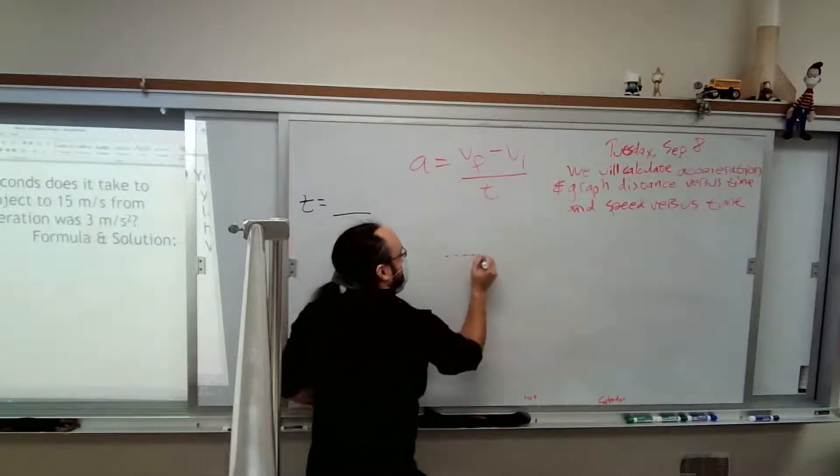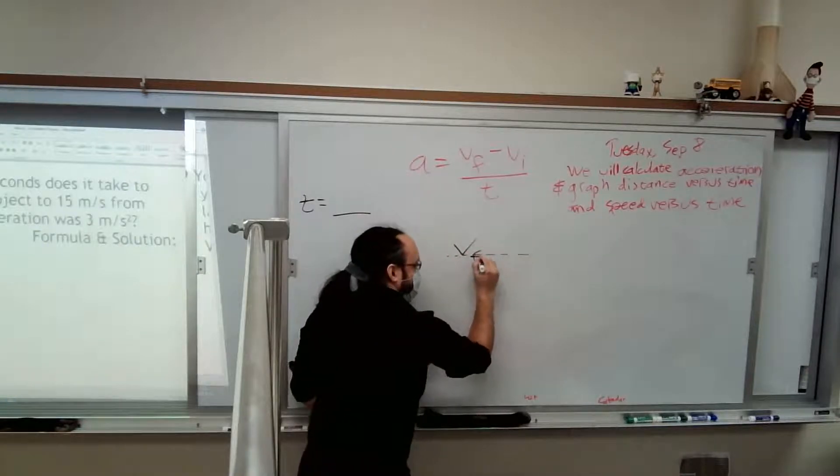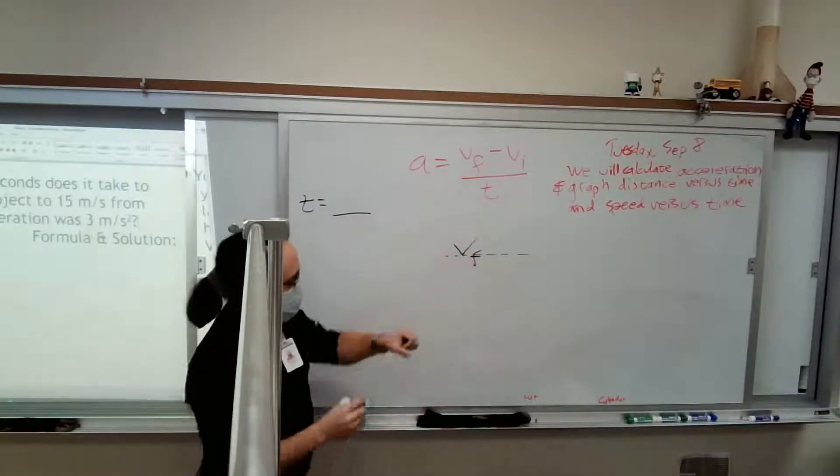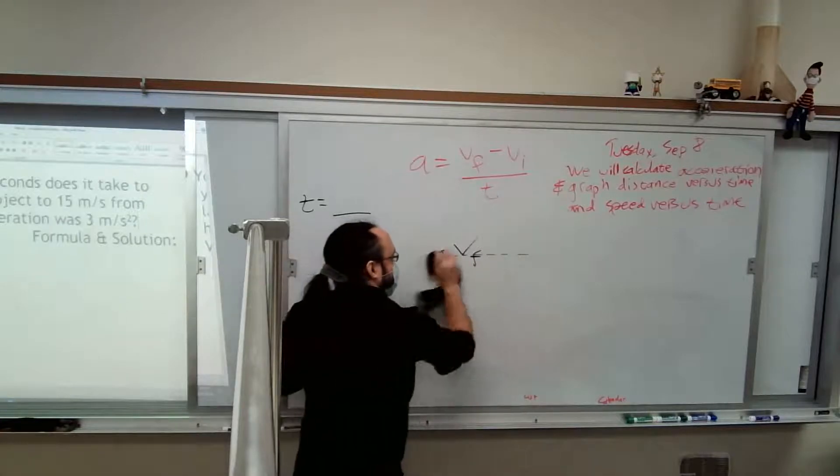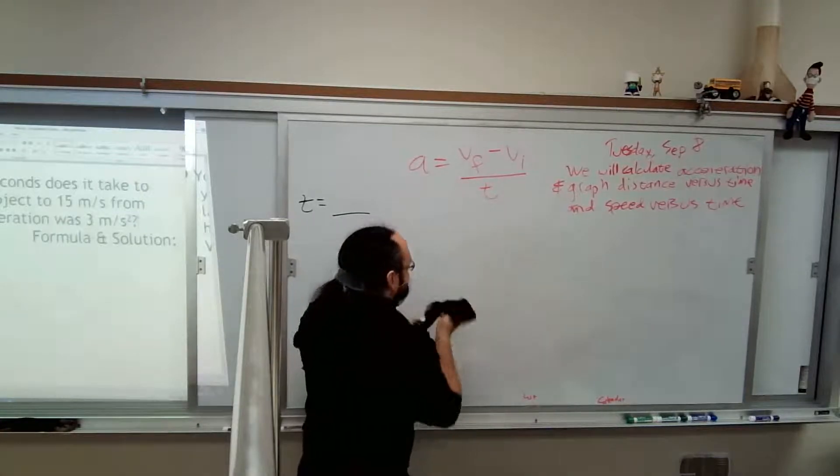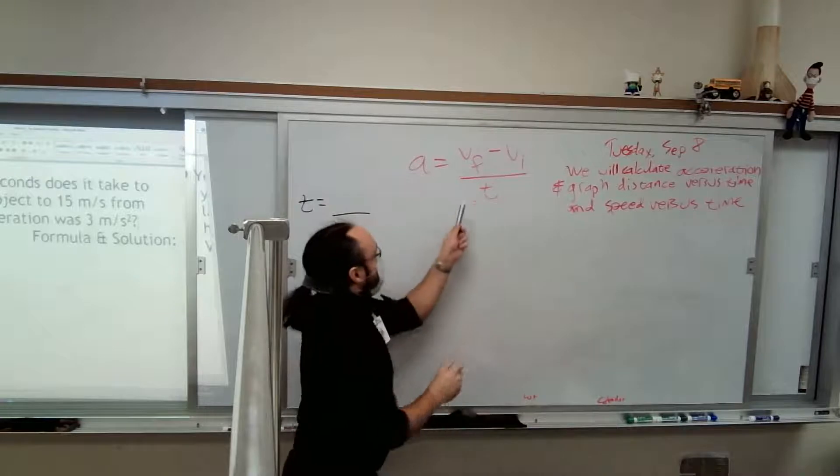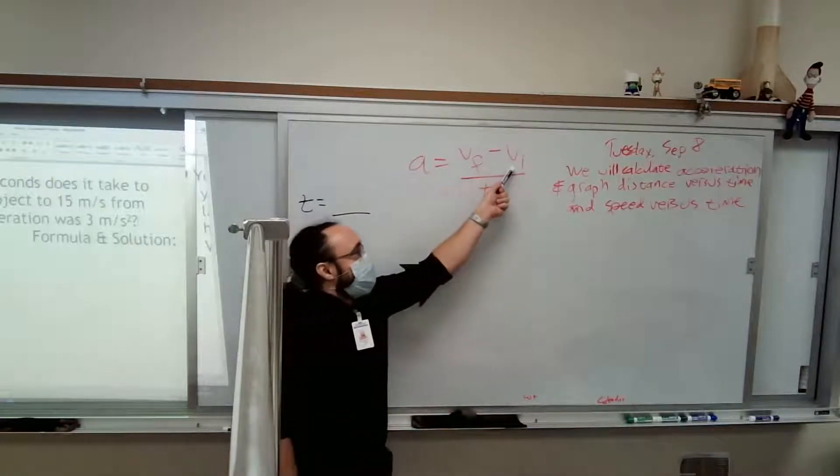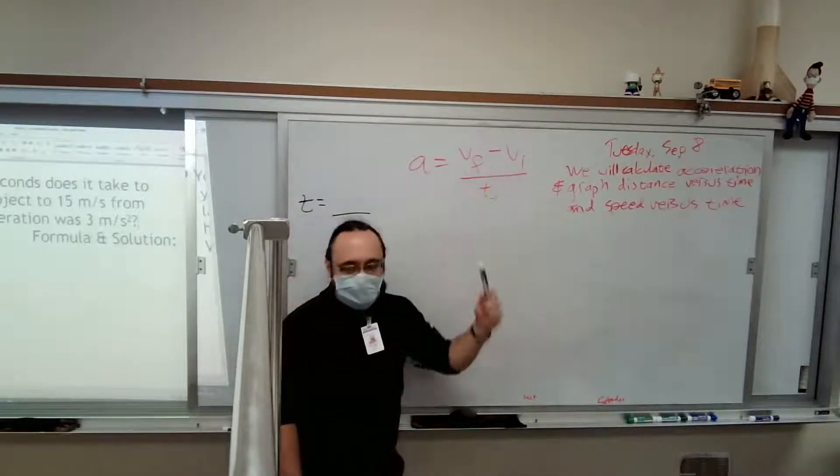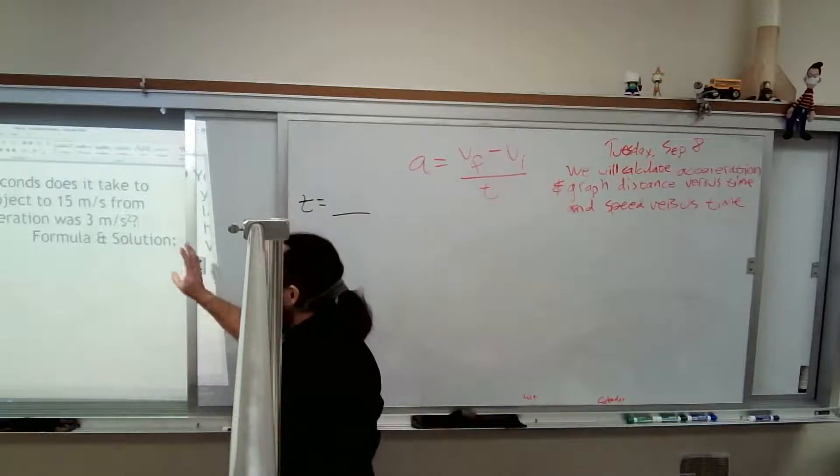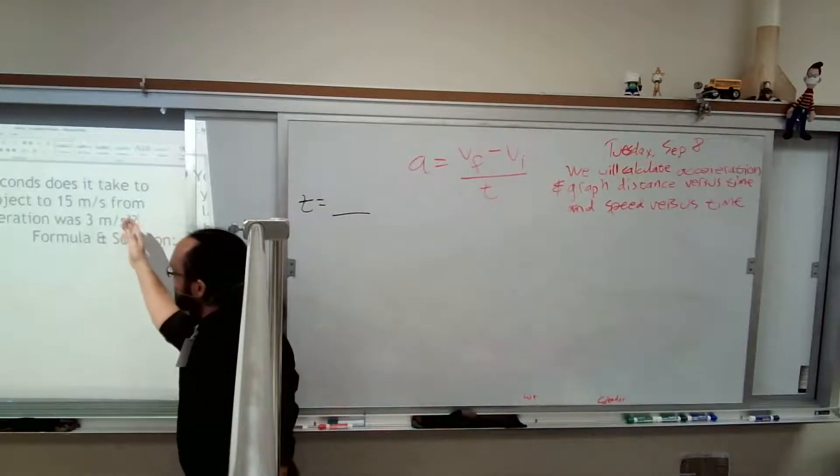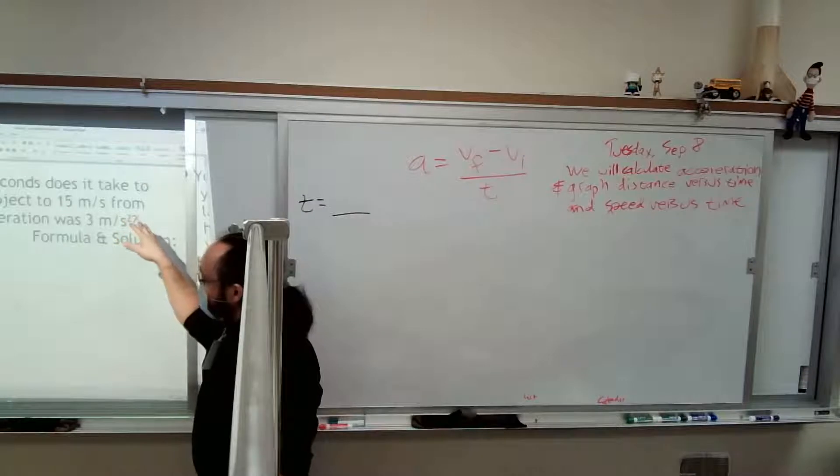Y'all know what the subscript is, but just in case. So this f is for final and this i is for initial. This is final velocity and this is initial velocity. Another reason I want to show you this question is we've got to figure out which is final and which is initial.